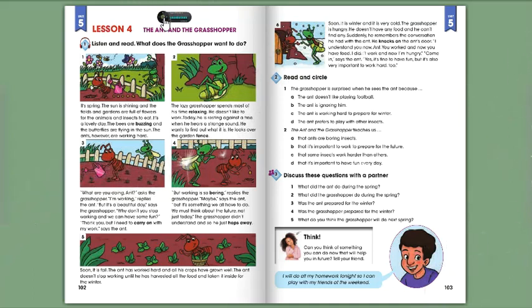It's spring. The sun is shining, and the fields and gardens are full of flowers for the animals and insects to eat. It's a lovely day. The bees are buzzing, and the butterflies are flying in the sun. The ants, however, are working hard. The lazy grasshopper spends most of his time relaxing. He doesn't like to work. Today he is resting against a tree when he hears a strange sound. He wants to find out what it is. He looks over the garden fence.